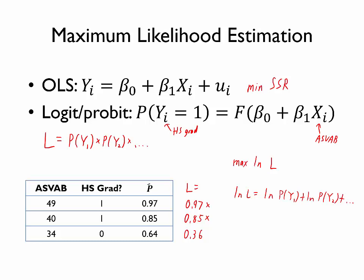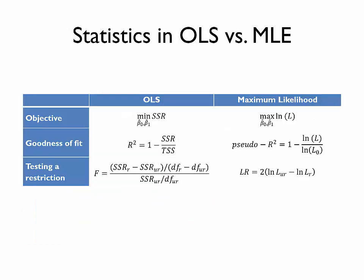Now that we've seen that OLS and maximum likelihood models like logit and probit have different objective functions — namely minimizing SSR versus maximizing log likelihood — we can see why output from these two models may differ in a number of ways. This table summarizes why a number of statistics are different in OLS versus maximum likelihood estimation models. OLS uses an objective of minimizing the sum of squared residuals, selecting the estimated intercept and coefficients to minimize that quantity, whereas maximum likelihood selects the intercept and coefficients to maximize the log of the likelihood.